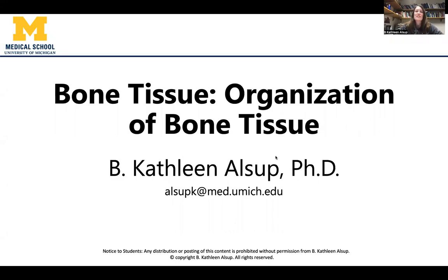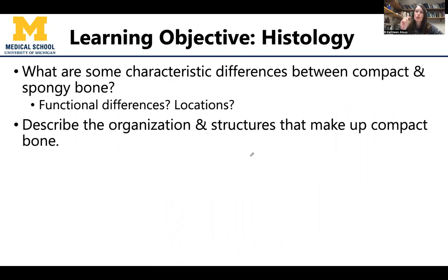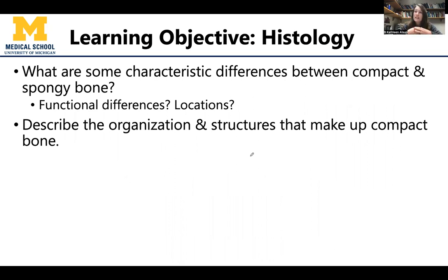Hello, anatomy colleagues. This is Dr. Alsup. And in this mini lecture, we're going to talk about the organization of bone tissue. There are really two main types of organization. We're not going to get into the nitty gritty detail — we're going to talk about some of these overarching themes.